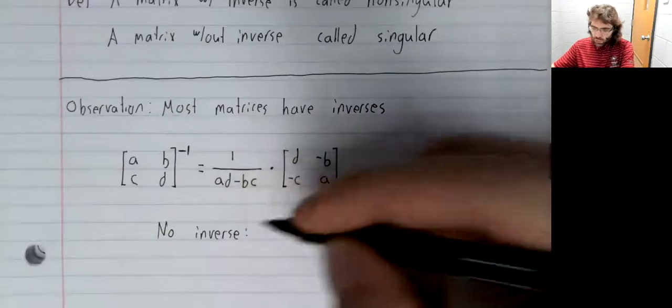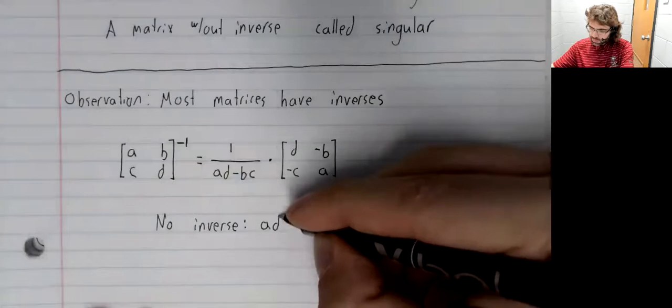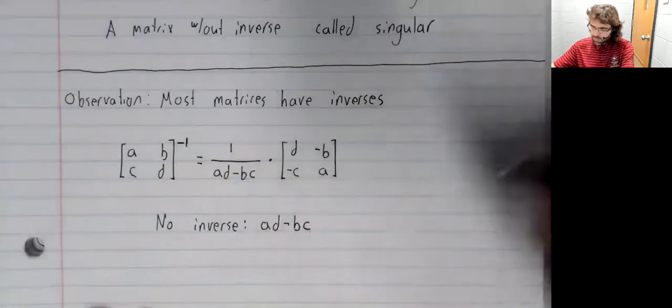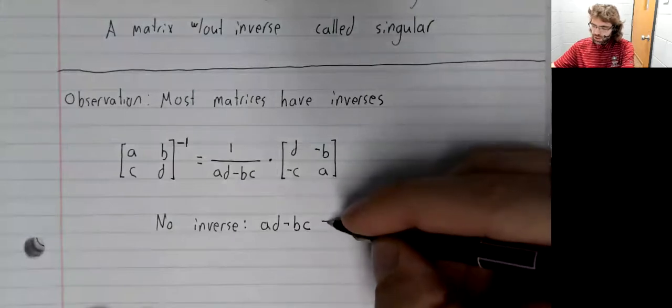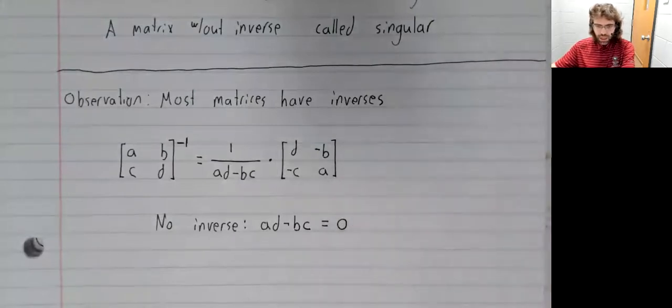There's no inverse if this thing we're dividing by happens to equal zero.